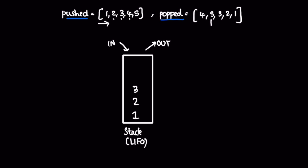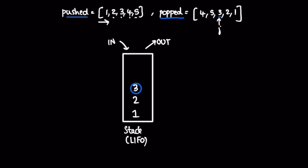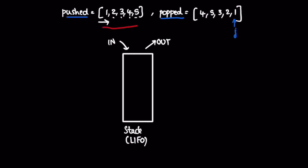We add the next element from the pushed array — five. Now five is the element j is pointing to, so we remove it and increment j. No more elements need to be added, so the topmost element is what j is pointing to — we remove three, increment j, then remove two, increment j. Finally we remove one and reach the end of the popped array, having processed all elements in both arrays.